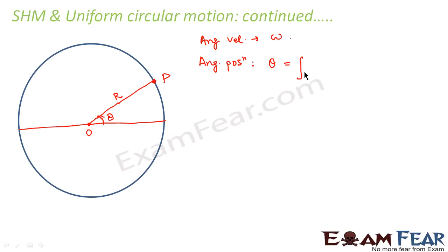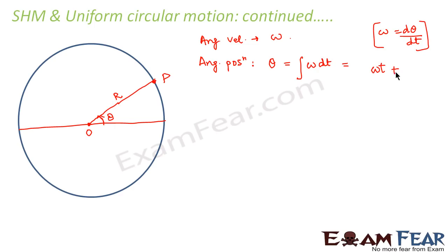So what will be theta? Theta will be nothing but the integration of omega dt. Why so? Because angular velocity omega is nothing but d-theta by dt. So this is omega dt, which is nothing but omega t plus some constant — let us take that constant as phi. So omega t plus phi is the angular position of the particle; that is, theta equals omega t plus phi.